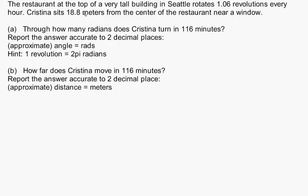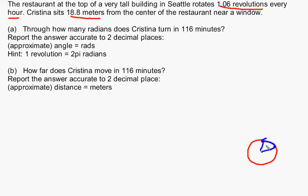In this problem, we have a restaurant at the top of a very tall building in Seattle, rotating 1.06 revolutions — that's 1.06 times around the circle every hour. We have a woman sitting 18.8 meters from the center of the restaurant. I'm picturing this circular restaurant with a center point, a person on the outside 18.8 meters from the center, and it is rotating. Let's suppose it's rotating in a particular direction, forming some angle theta.